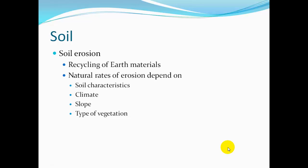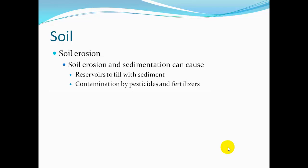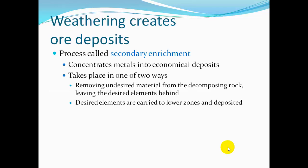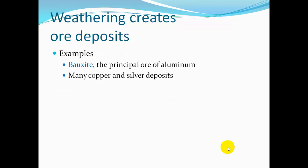Soil erosion causes the recycling of Earth materials. Natural rates of erosion depend on soil characteristics, climate, slope, and type of vegetation. Soil erosion and sediment can cause reservoirs to fill with sediment and contamination by pesticides and fertilizers. Weathering also creates ore deposits through a process called secondary enrichment, which concentrates metals into economic deposits — either by removing undesired material leaving desired elements behind, or by carrying desired elements to lower zones. Examples include bauxite, the principal ore of aluminum, and many copper and silver deposits.